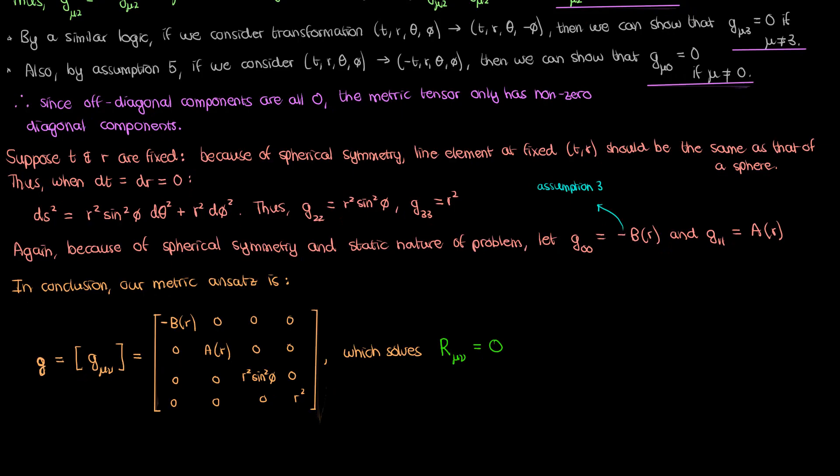In the next lesson I'm going to derive the Christoffel symbols for this ansatz and then the Ricci tensor components, which I'll use to solve the Einstein field equations for the Schwarzschild solution. I'd like to thank the following patrons for their support, and if you enjoyed this lesson feel free to like and subscribe. This is the Faculty of Khan signing out.